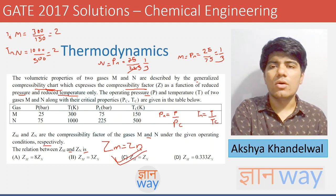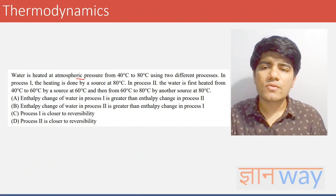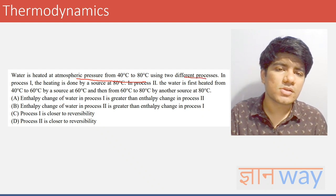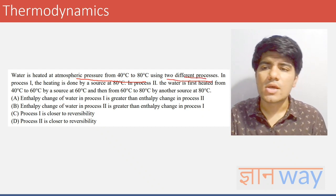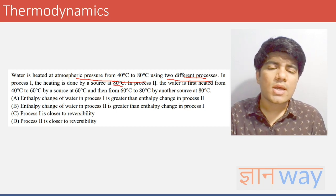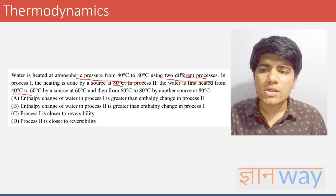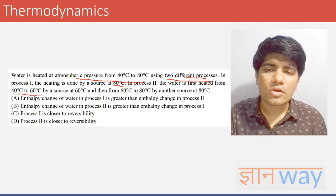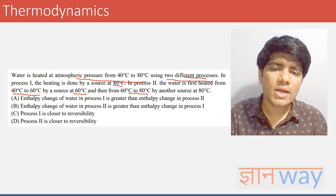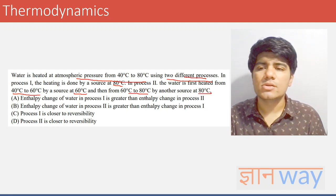The next question: water is heated at atmospheric pressure from 40°C to 80°C using two different processes. In process one, heating is done by a source at 80°C. In process two, water is heated from 40°C to 60°C by a source at 60°C, and then from 60°C to 80°C by another source at 80°C.